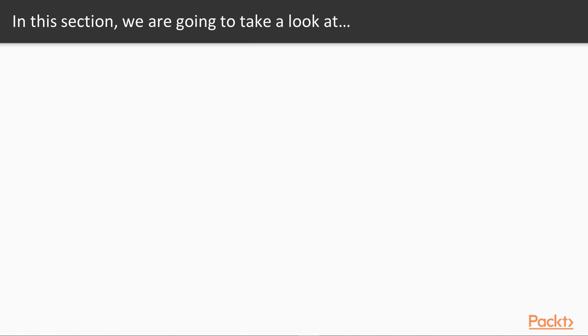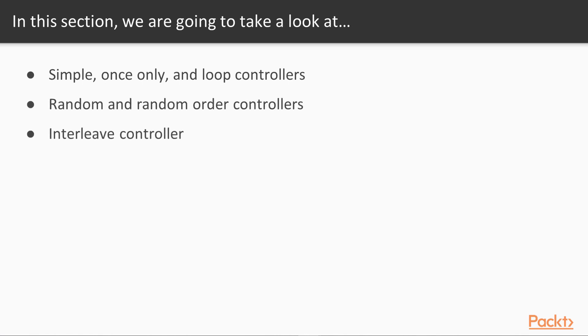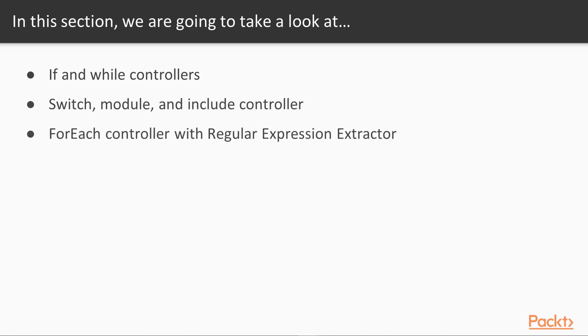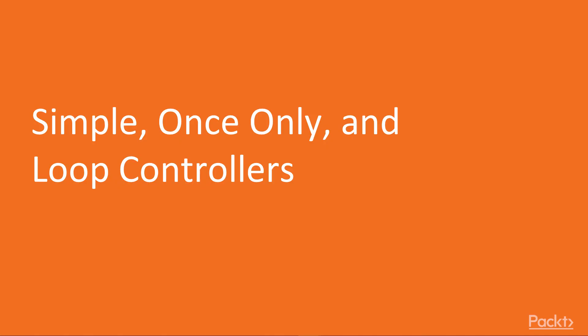Let's take a look at what we are going to cover in this entire section. First, we will start with simple, once only and loop controllers, then we will look at random and random order controller, then interleaved controller, throughput controller, runtime controller, if and while controllers, switch module and include controller, then foreach controller with regular expression extractor and foreach controller with XPath extractor, and finally we will talk about recording controller.